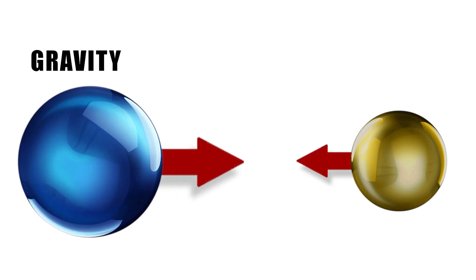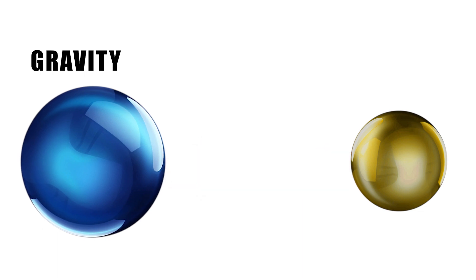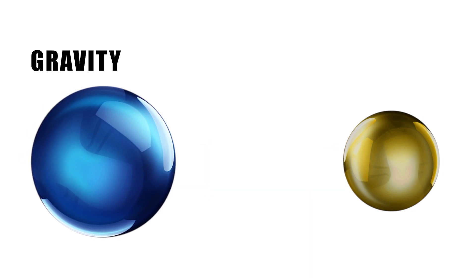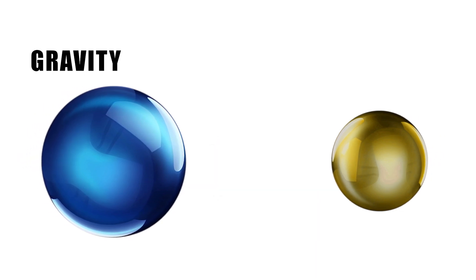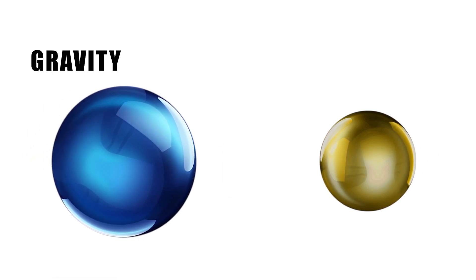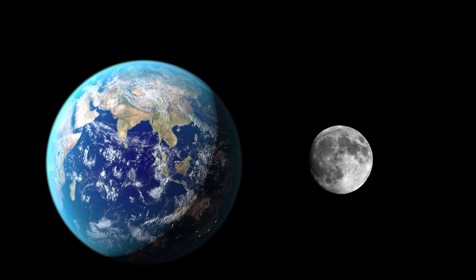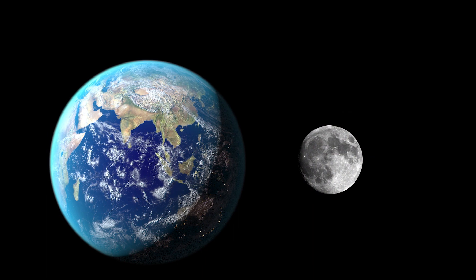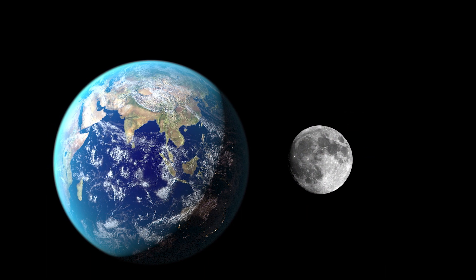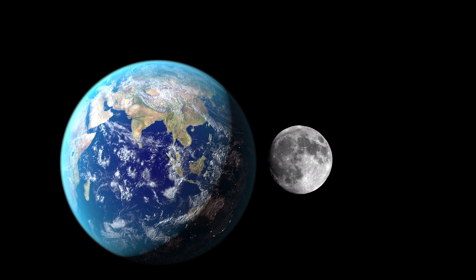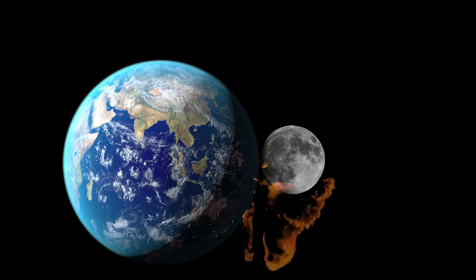The greater the masses, the greater the force. And the closer they get, the stronger the force becomes. For example, the Earth and the Moon — there's a force of gravity between them that will draw them closer and closer. But what keeps them from colliding?